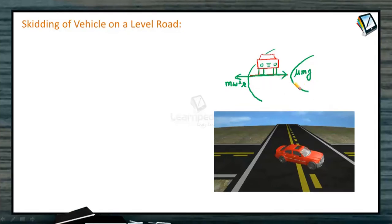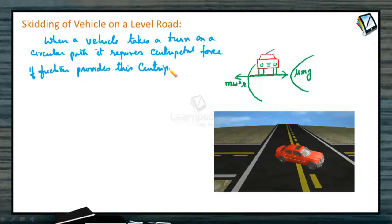When a vehicle takes a turn on a circular path, it requires centripetal force. If friction provides this centripetal force, then the vehicle can move in the circular path safely.